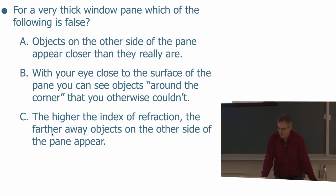A: Objects on the other side of the pane appear closer than they really are. B: With your eye close to the surface of the pane, you can see objects around the corner that you otherwise couldn't. C: The higher the index of refraction, the farther away objects on the other side of the pane appear.